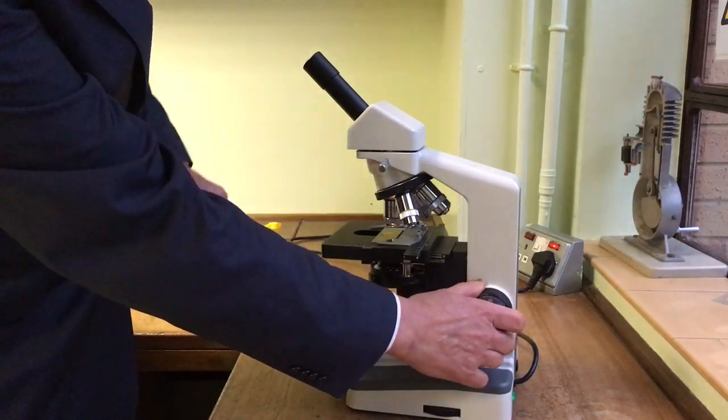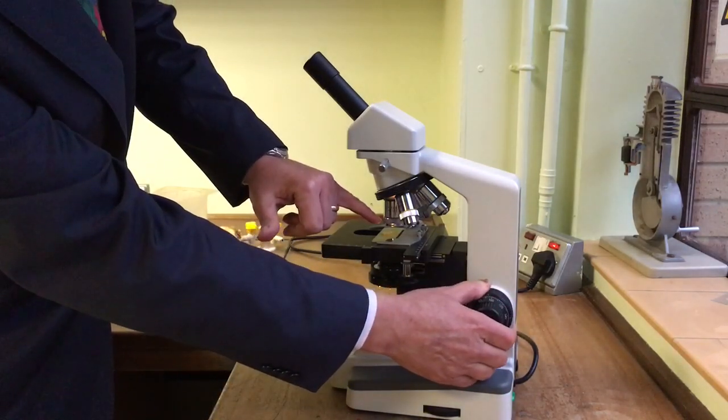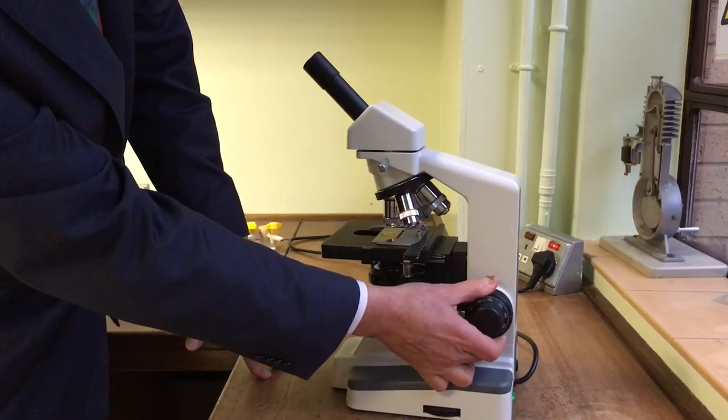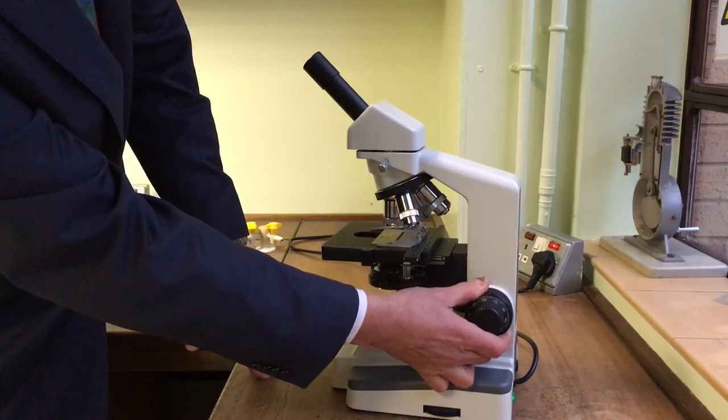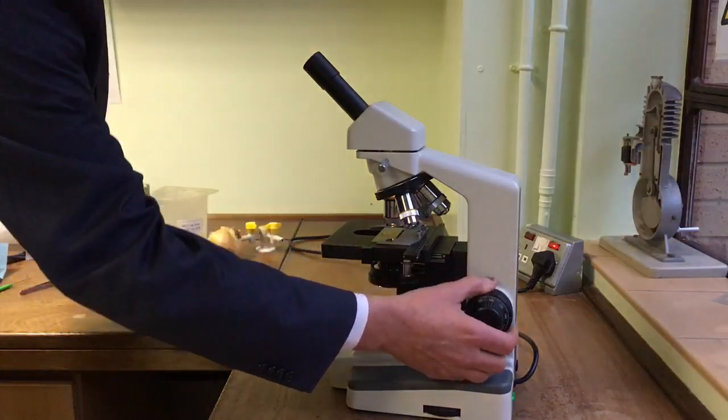While looking at the slide, I'm winding with the coarse focus so that the slide is as close to the lens as it will come. Then I'm going to look through the eyepiece and focus downwards using the coarse focus until it's nearly sharp.